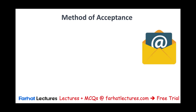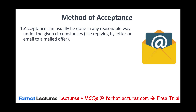How can you accept? Method of acceptance. Usually, acceptance can be done in any reasonable way given the circumstances, like replying by letter, email, or telephone. However, if the offeror specifies a particular method — they tell you exactly how they want you to respond — then that specified method must be used. If they want you to email them, you have to email them. If they want certified mail, you have to send certified mail. Acceptance through a different method may be considered a counter offer, meaning you did not really accept. The old offer is gone and now you are making the offer.